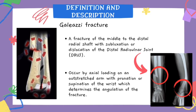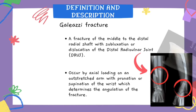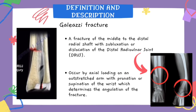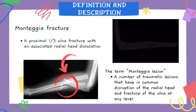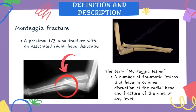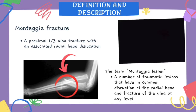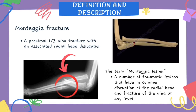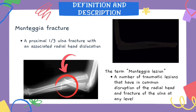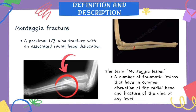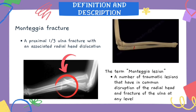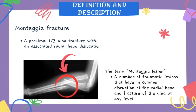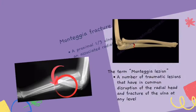These injuries usually occur by axial loading on an outstretched arm with pronation or supination of the wrist, which determines the angulation of the fracture. A Monteggia fracture is defined as a proximal one-third ulnar fracture with an associated radial head dislocation. The term Monteggia lesion describes traumatic lesions that have in common disruption of the radial head and fracture of the ulna at any level.